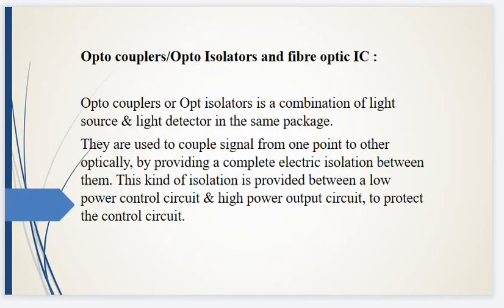Optocouplers and Optoisolators are a combination of a light source and a light detector in the same package. They are used to couple signals from one point to another optically by providing complete electrical isolation between them. This isolation is provided between a low power control circuit and a high power circuit to protect the control circuit.